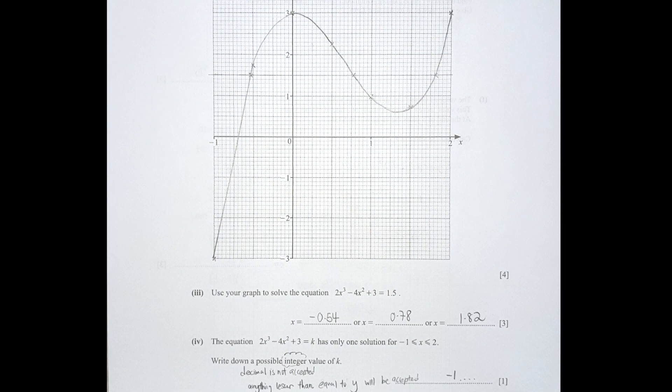For part 2, using your graph to solve the equation: y equals 1.5. When the line y equals 1.5 intersects the curve, it does so at 3 points: negative 0.54, 0.78, and 1.82. Yours could be slightly different from mine, but as long as it's within the acceptable range, your results will be accepted.